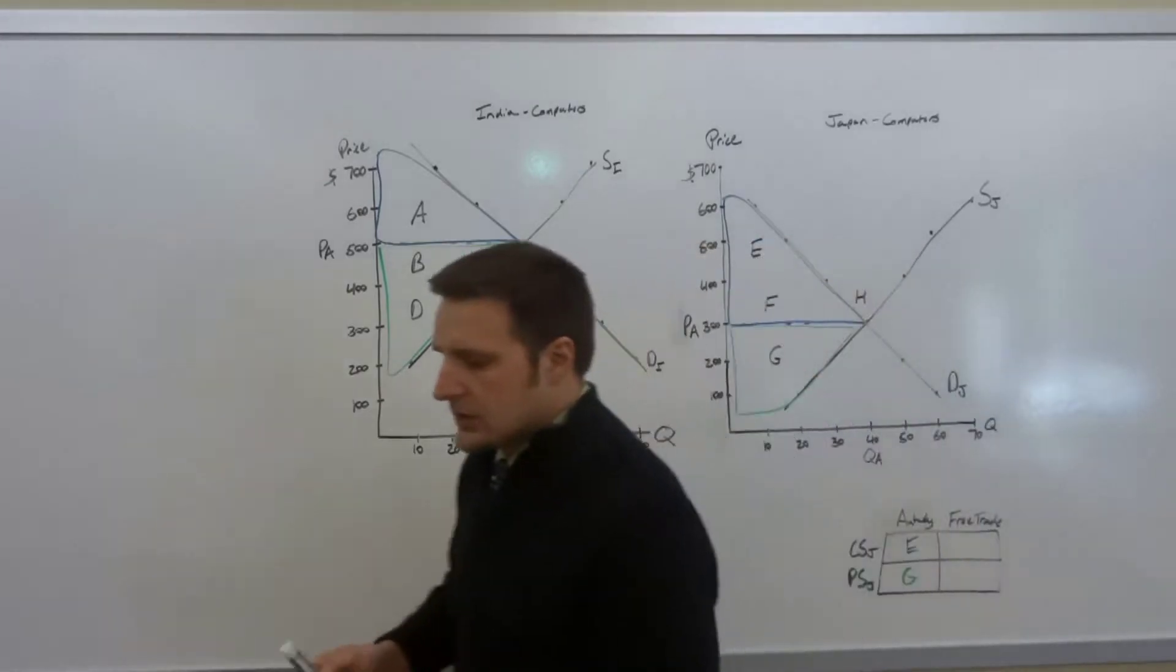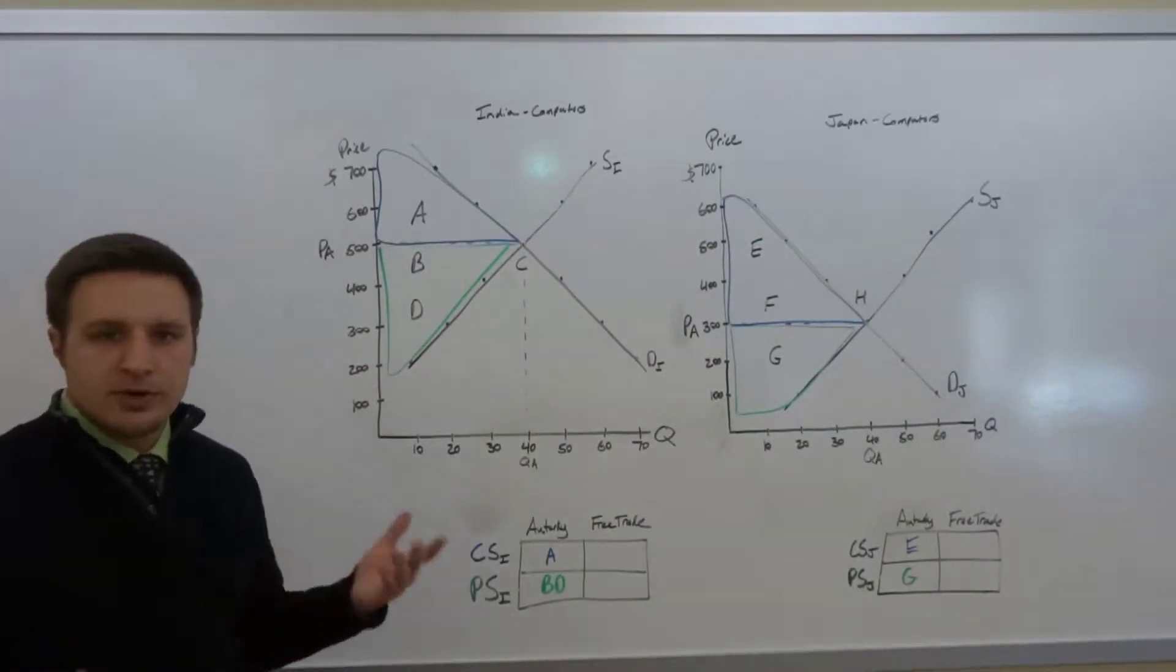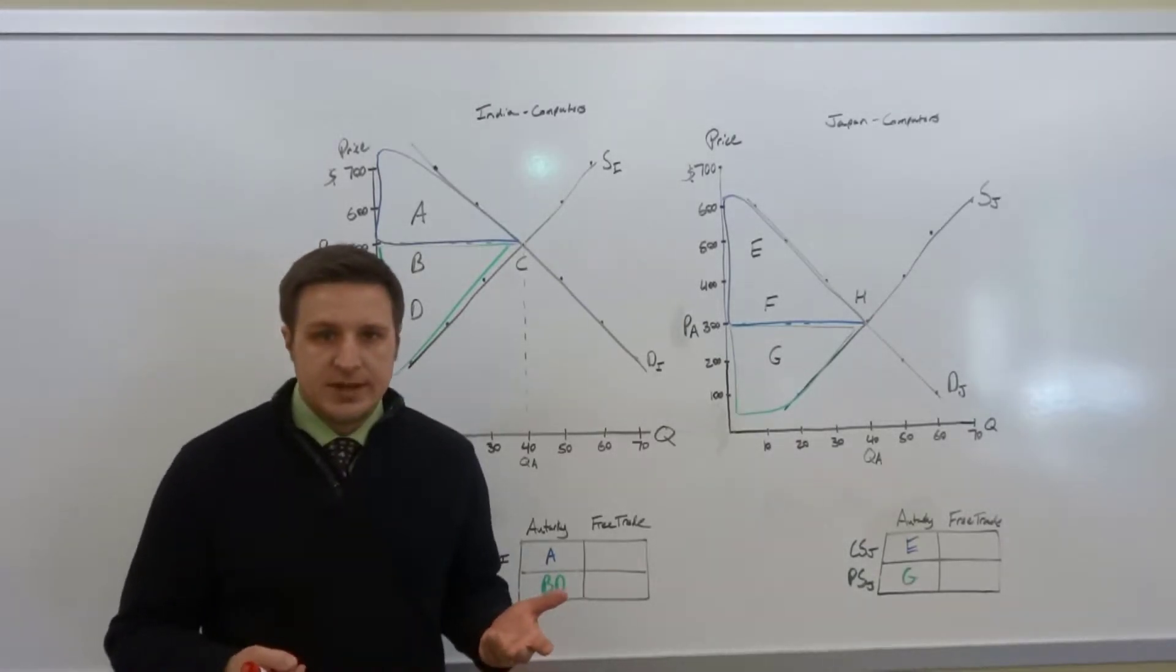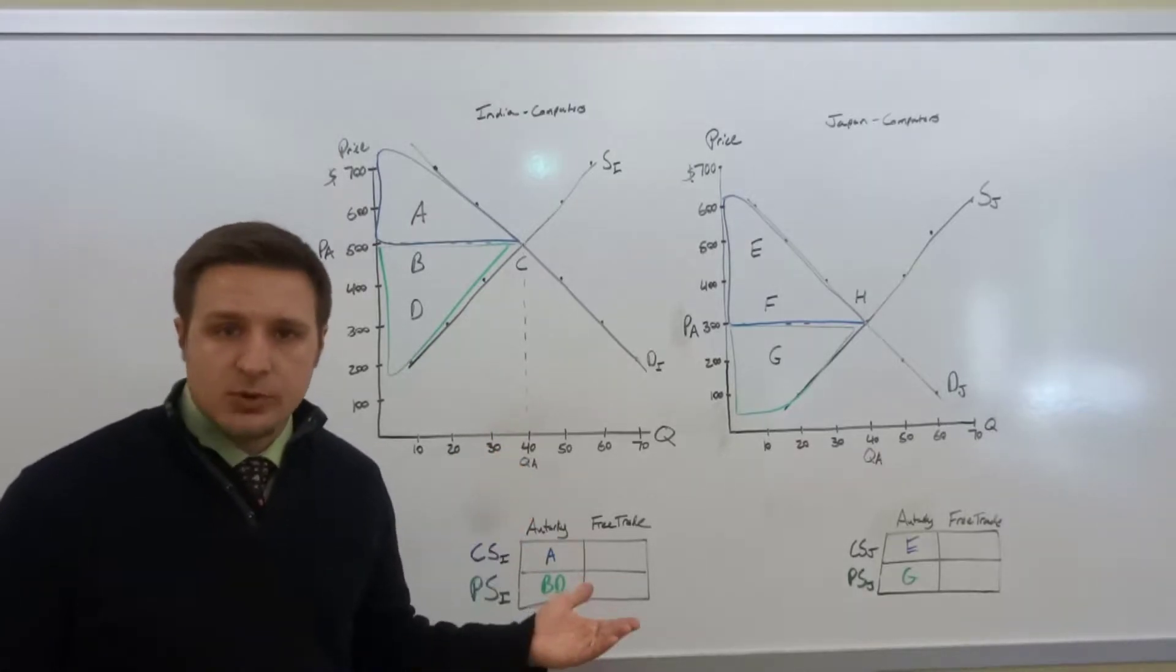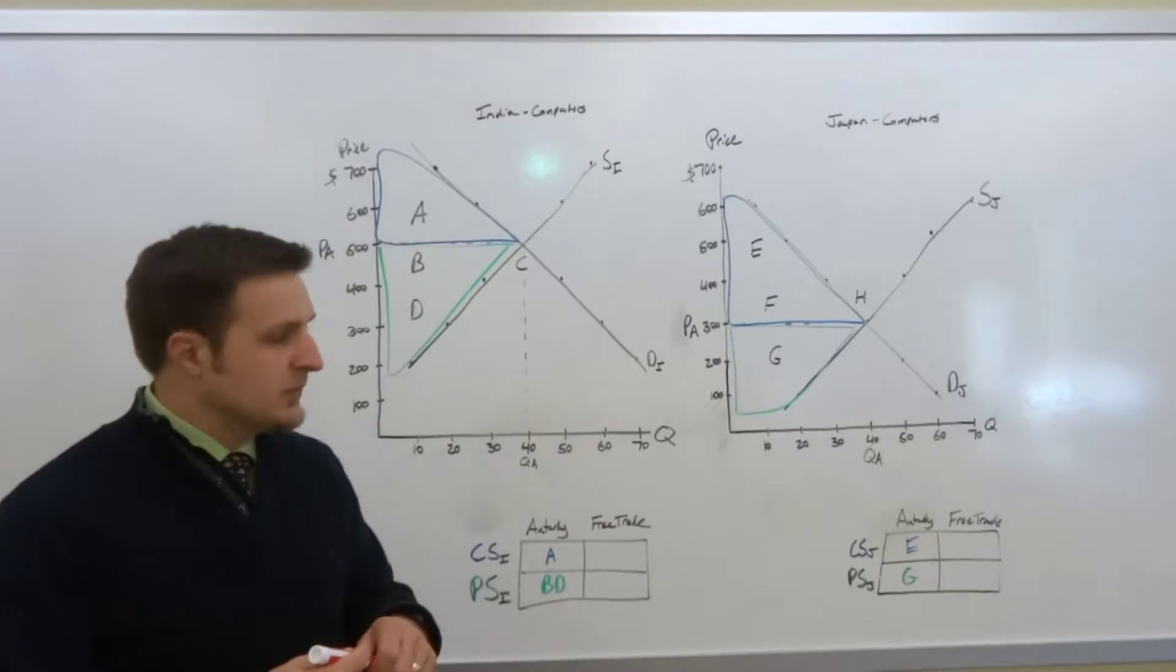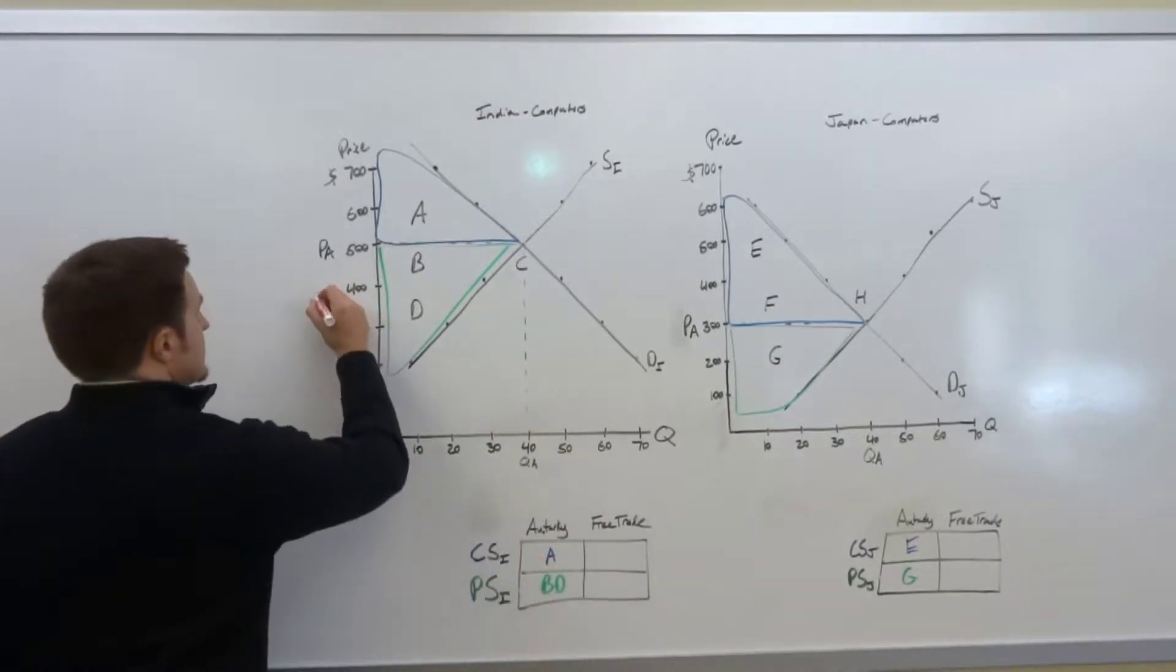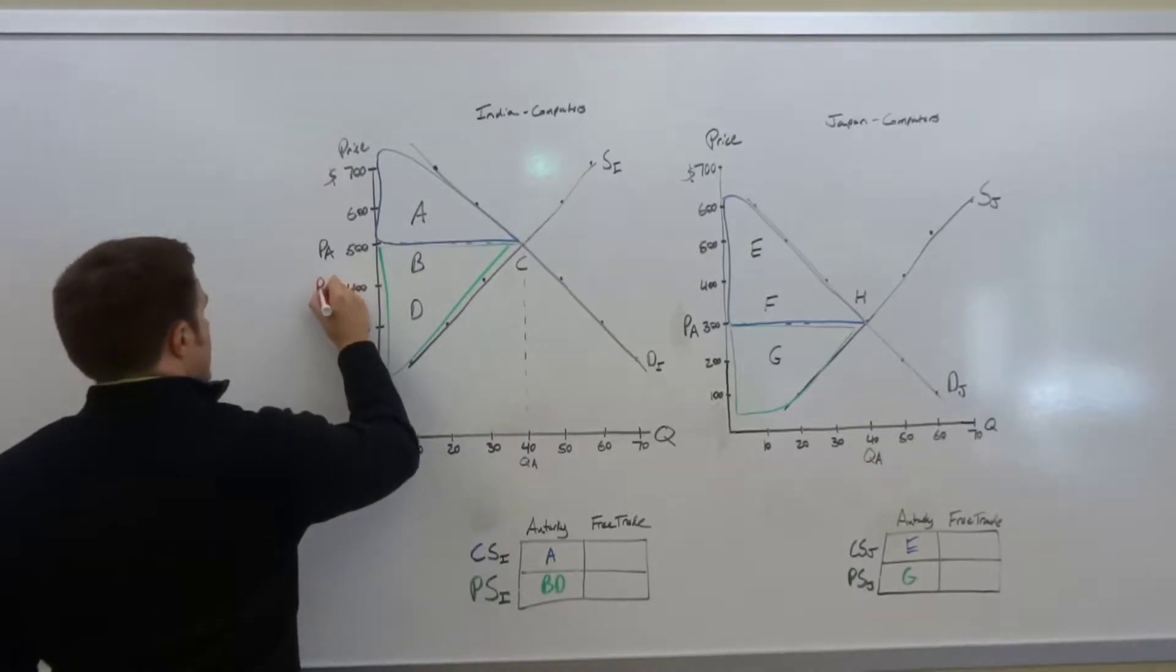Now suppose that both countries at the same time decide, you know what, we're going to open up our borders to international trade. We're going to allow our consumers to import and our producers to export if they would like to. Let us also suppose that the price in the free market, or the world price, is $400.